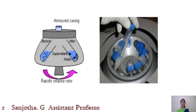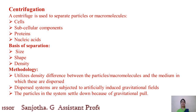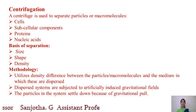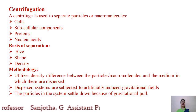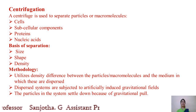Another picture also shows how the centrifuge machine looks. Centrifugation can be used to separate cells, subcellular components such as nucleus, nucleolus, endoplasmic reticulum, Golgi complex, and ribosomes, as well as proteins and nucleic acids. The basis of separation mainly depends on size, shape, and density of the particle.